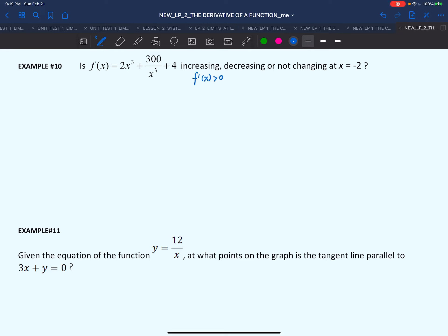Remember we said in the previous lesson, in lesson 1, that a function is increasing if f'(x) is positive, decreasing if f'(x) is negative, not changing if f'(x) = 0. We'll have to find the derivative and then evaluate it at -2 and check whether it's positive, negative, or 0. Let's get started.